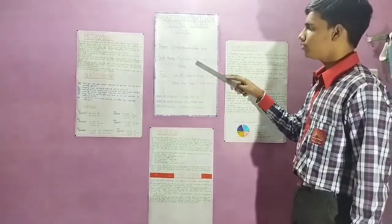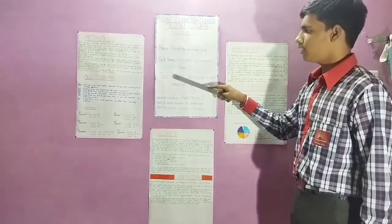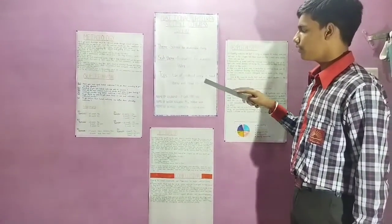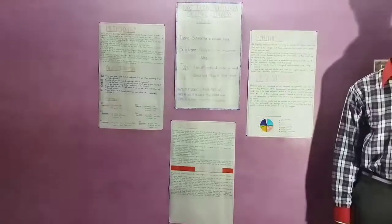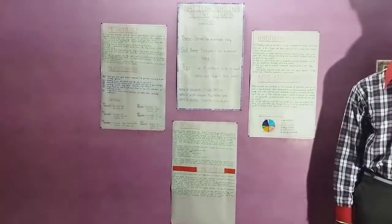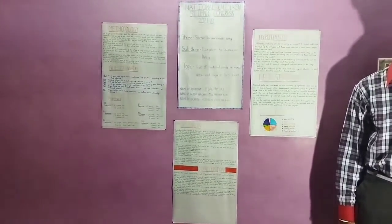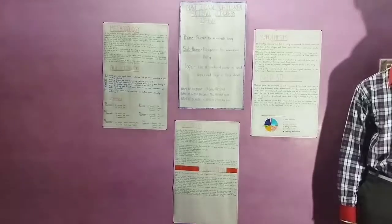I have chosen theme number one, Ecosystem for Sustainable Living, and the topic of my project is use of medicinal plants in rural areas and villages of Durk district. The forest area is about 8.9% of the total area of Chhattisgarh. There are total 83 villages in Durk district.